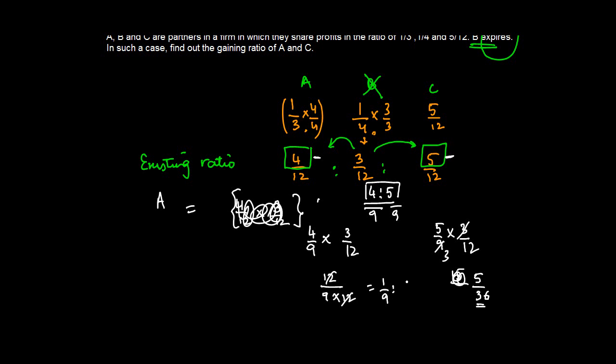We can also write this as 4/36 just to convert it into the same denominator. So the ratio of gain between A and C is 4/36 : 5/36, or 4:5.